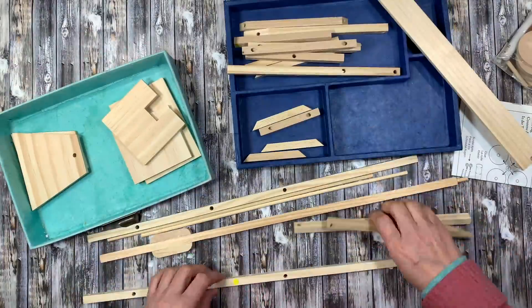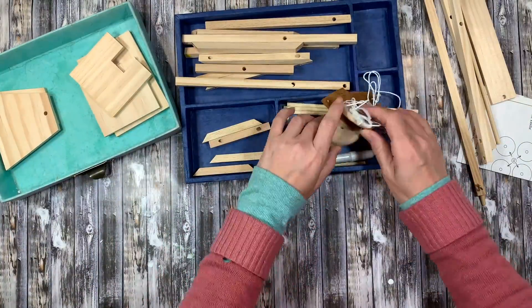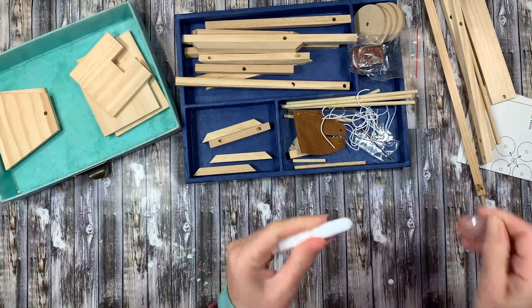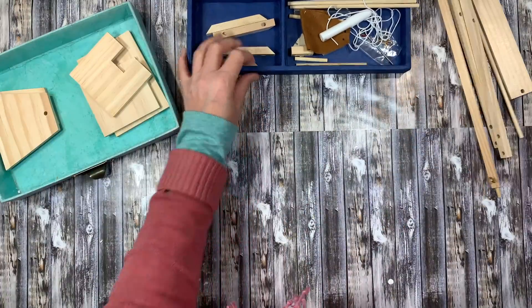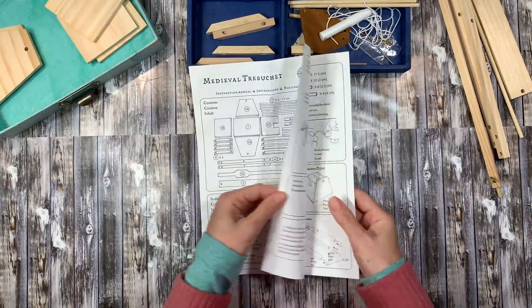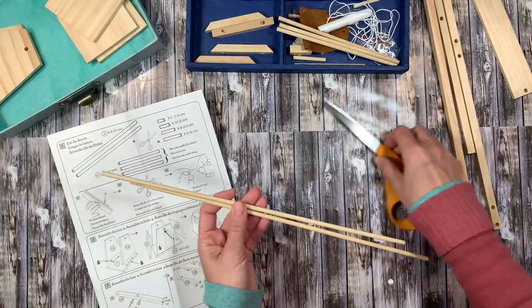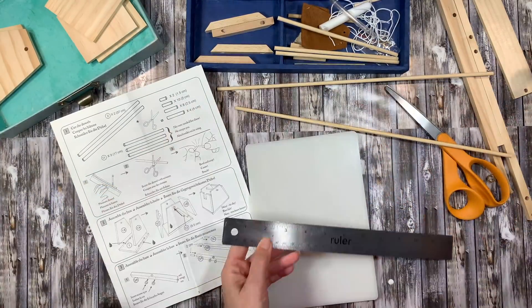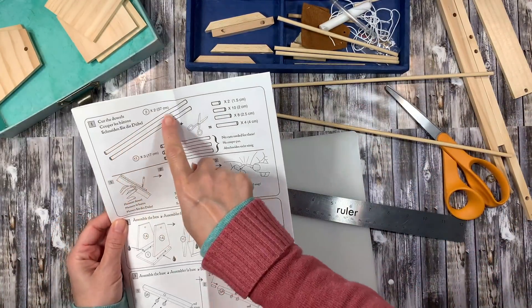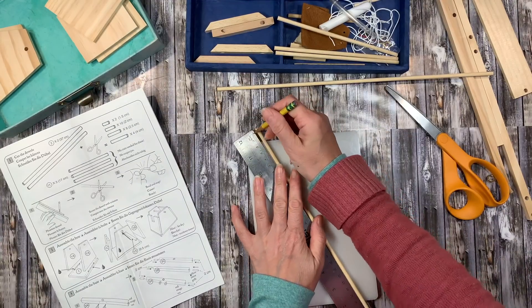All right, so this kit comes with everything you need in order to build a working trebuchet. My son is 12 years old and he is going to be working on this project. I went ahead and opened everything up and separated all of the materials into a couple of different trays for him, and then he's going to do this project pretty much entirely on his own.